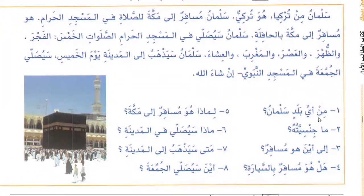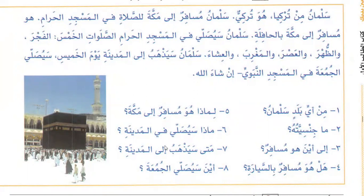Now you need to write the answers. Min ayyi baladin salman — from which country is Salman? Salmanu min turkiya — Salman is from Turkey. What is his nationality? He is Turkish. Ila aina huwa musafir — where is he traveling to? Salmanu musafirun ila makkata lissolati fil masjid al-haram. Hal huwa musafirun bil sayyara — is he traveling by car? No — la huwa musafirun bil hafila — he is traveling by bus. In this way you will answer them.